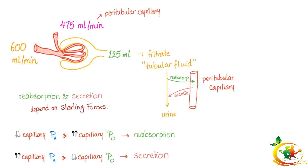Blood comes through the afferent arteriole to the glomerulus, then continues to the peritubular capillaries. Of 600 ml per minute renal plasma flow, 125 goes into the tubule as GFR, and 475 continues to the peritubular capillaries. The filtrate in the tubule going toward urine: reabsorption means moving to the capillary, and secretion means moving from the capillary to the tubular filtrate.